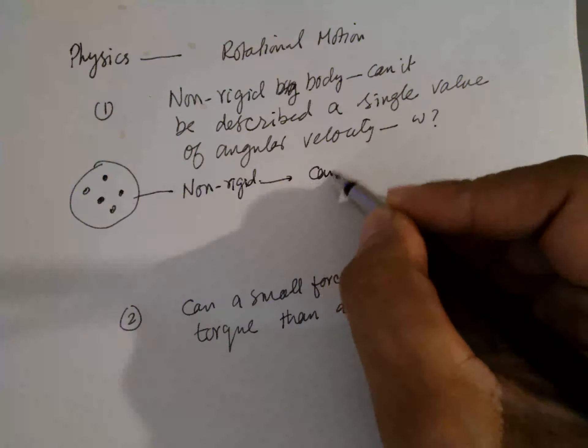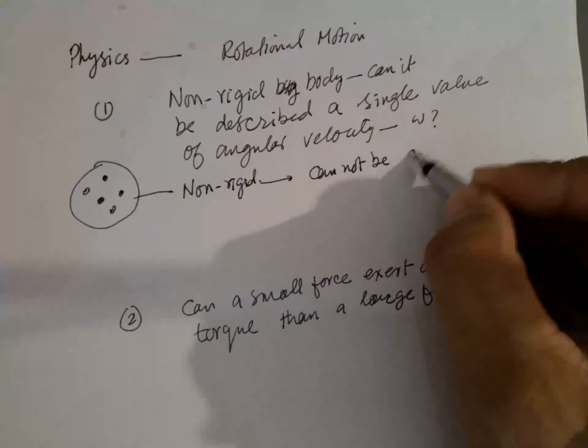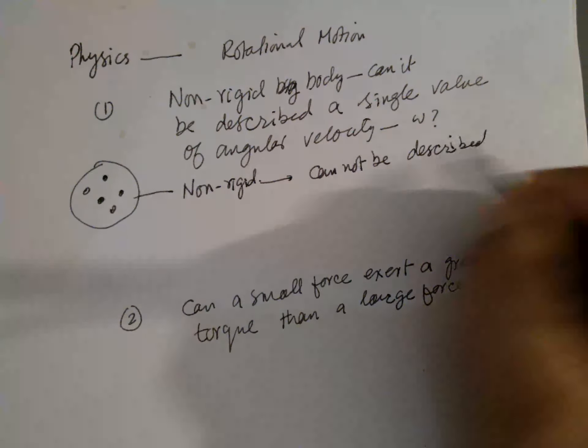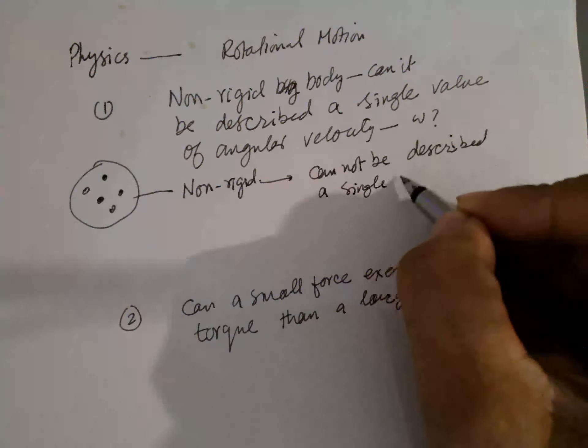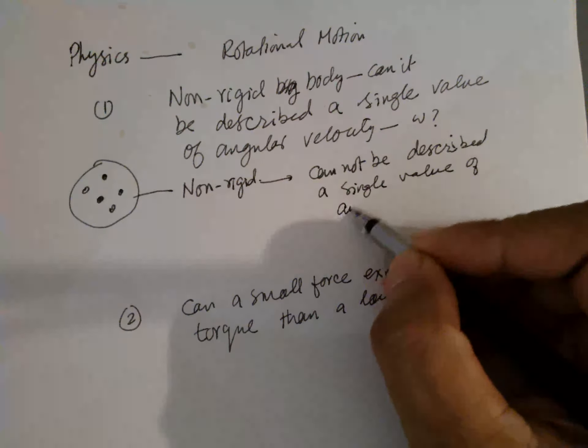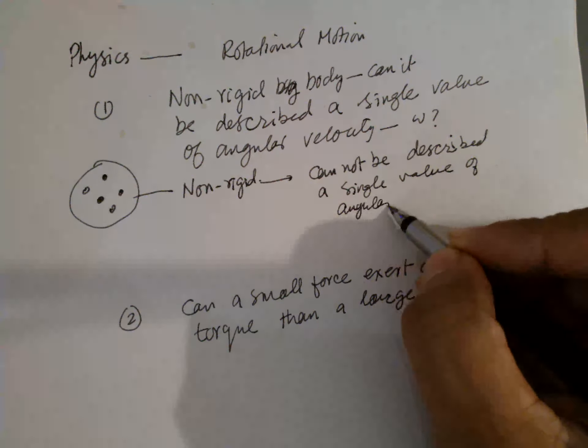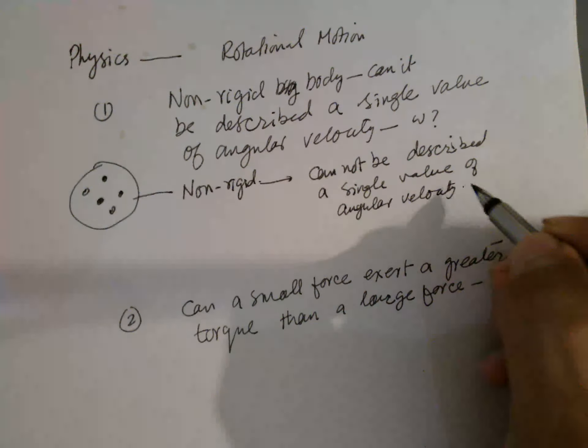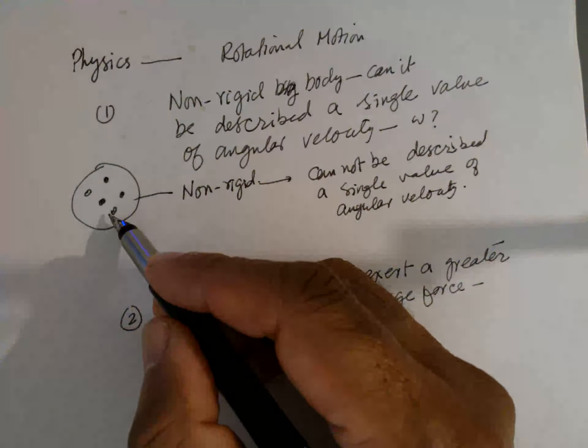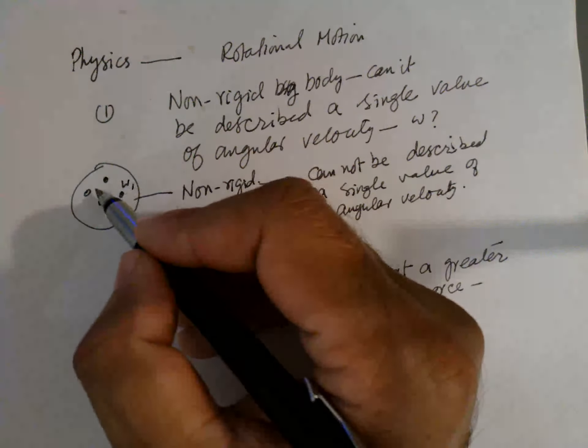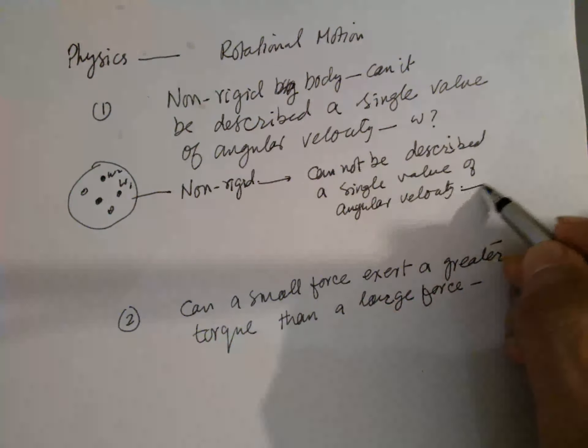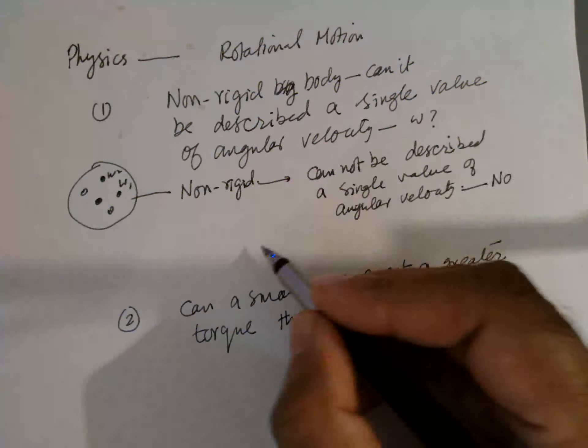It cannot be described by a single value of angular velocity because it has different objects and different objects have different velocities: omega 1, omega 2, omega 3. They have different values, so no.